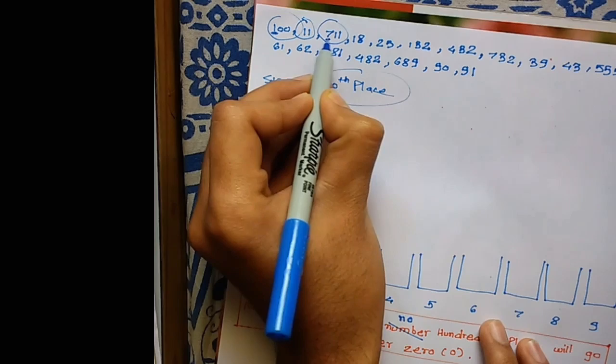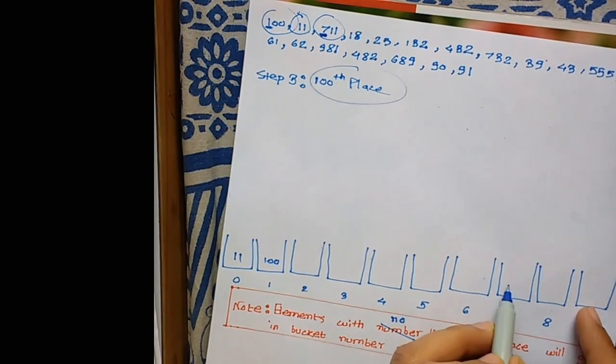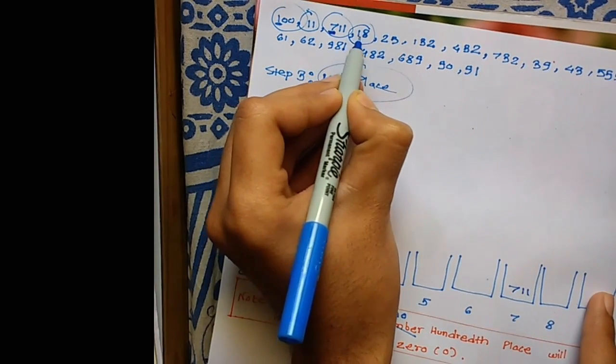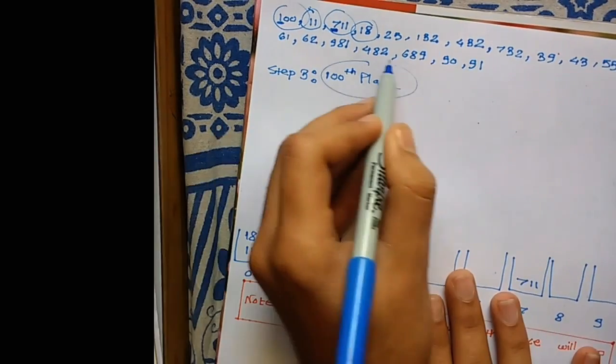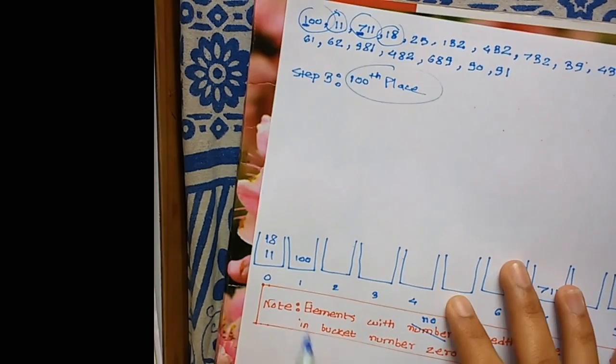711 has 100th place 7, so it goes in bucket 7. Number 18 has no 100th place, so it goes in bucket 0. Similarly, we sort each element from this list into their respective buckets.